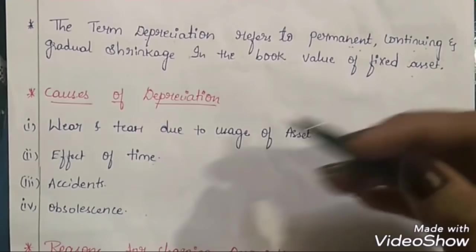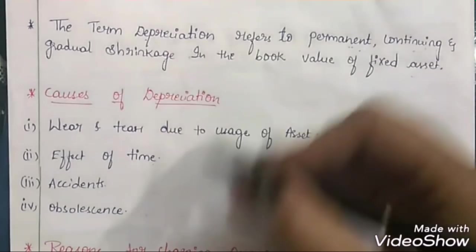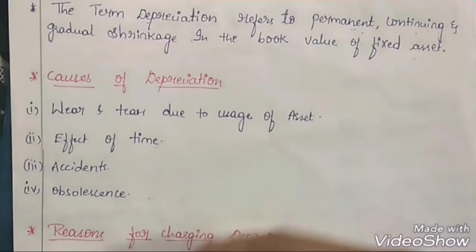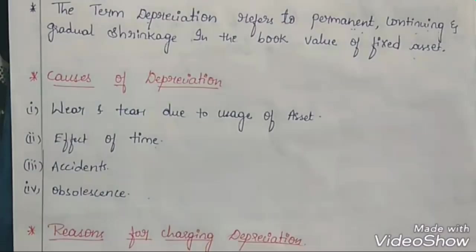Next is the effect of time, also called efflux of time. As time passes, whether we use the fixed asset or not, the value will go on reducing. Third is accidents — if our fixed asset meets with any type of accident, its value will gradually decrease.